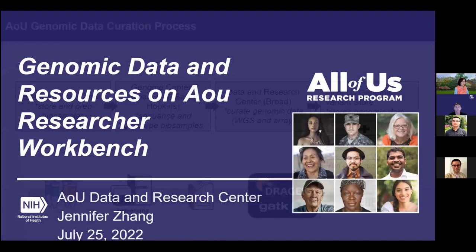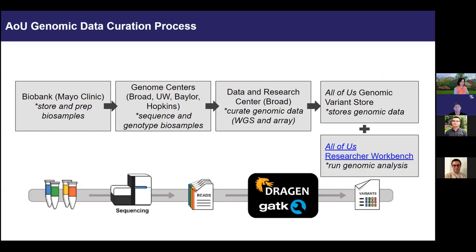Before we get into the data and supporting materials, I'd like to show you the curation process of our genomic data. There are many groups working in the All of Us research program to make the genomic data available in the research workbench. We have the biorepository to store and provide the biosamples, and then the samples are sent to the genome centers — the Broad Institute, University of Washington, Baylor College of Medicine, and Johns Hopkins — to sequence and genotype the biosamples.